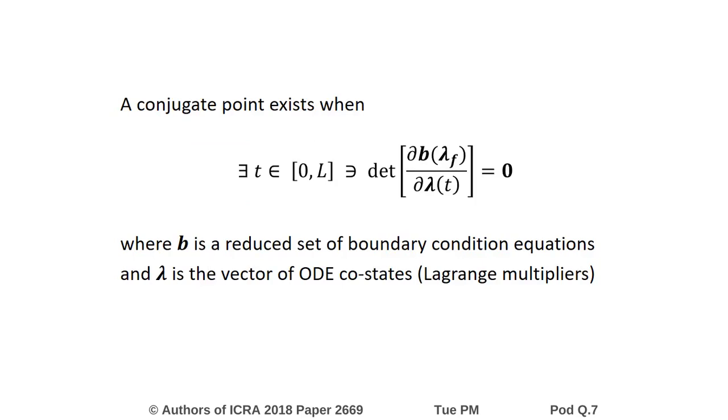This results in a so-called conjugate point test. If we find a conjugate point on the integration interval, the solution is physically unstable. This can be tested by evaluating the determinant of the matrix of partial derivatives of the boundary conditions with respect to the costates.